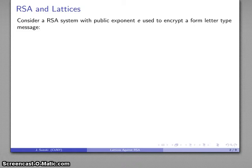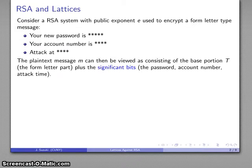Suppose I have an RSA system with public exponent E, and suppose I'm using it to encrypt essentially a form letter type message. For example, a letter that says your password is, and here's what it is, your account number is this, attack at some time. In general, I can think about that plaintext message M as consisting of some base portion, which is completely known. We know what this is. And then we have the significant bits, the part that we don't know, that are what distinguishes the form letters.